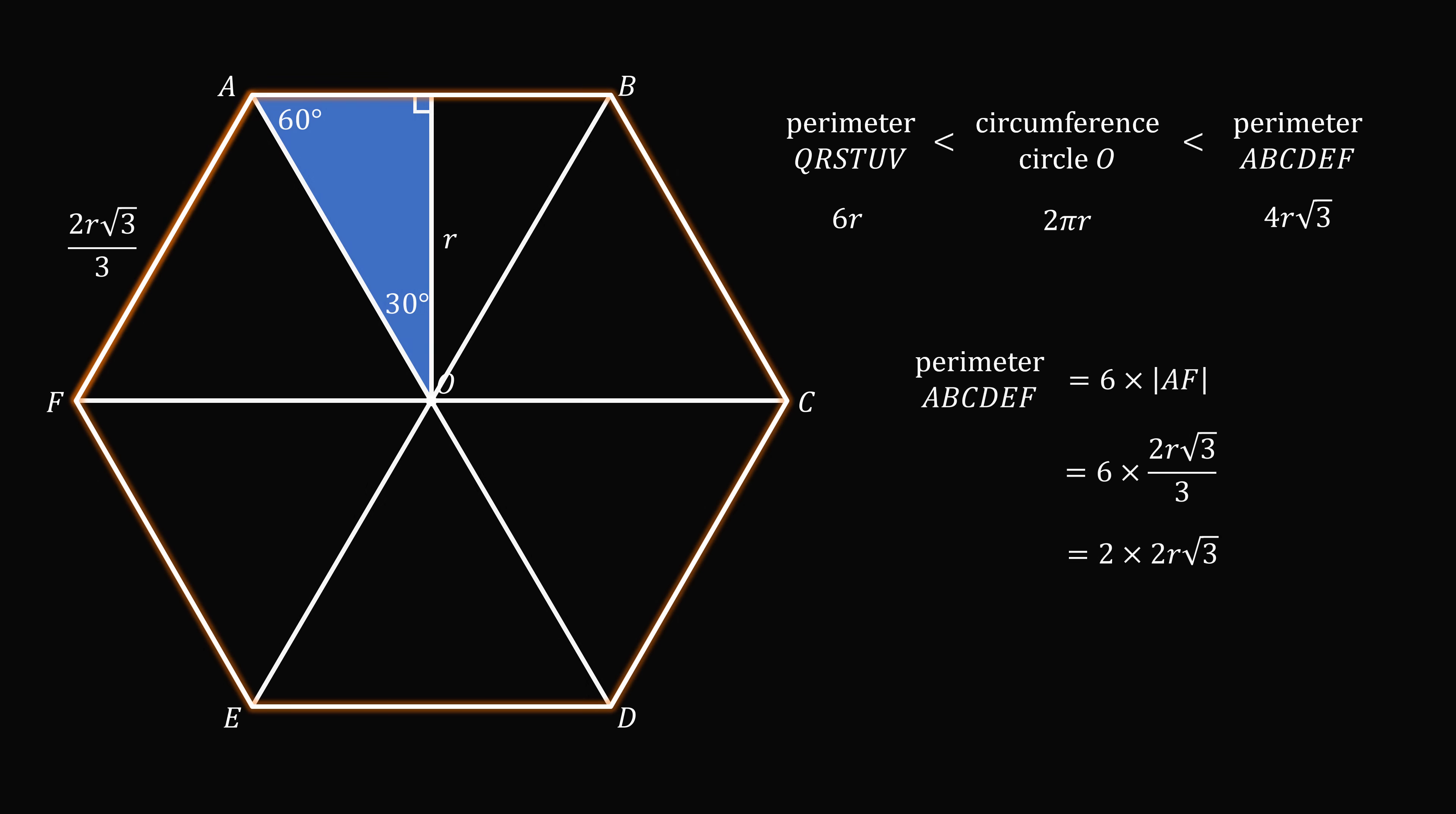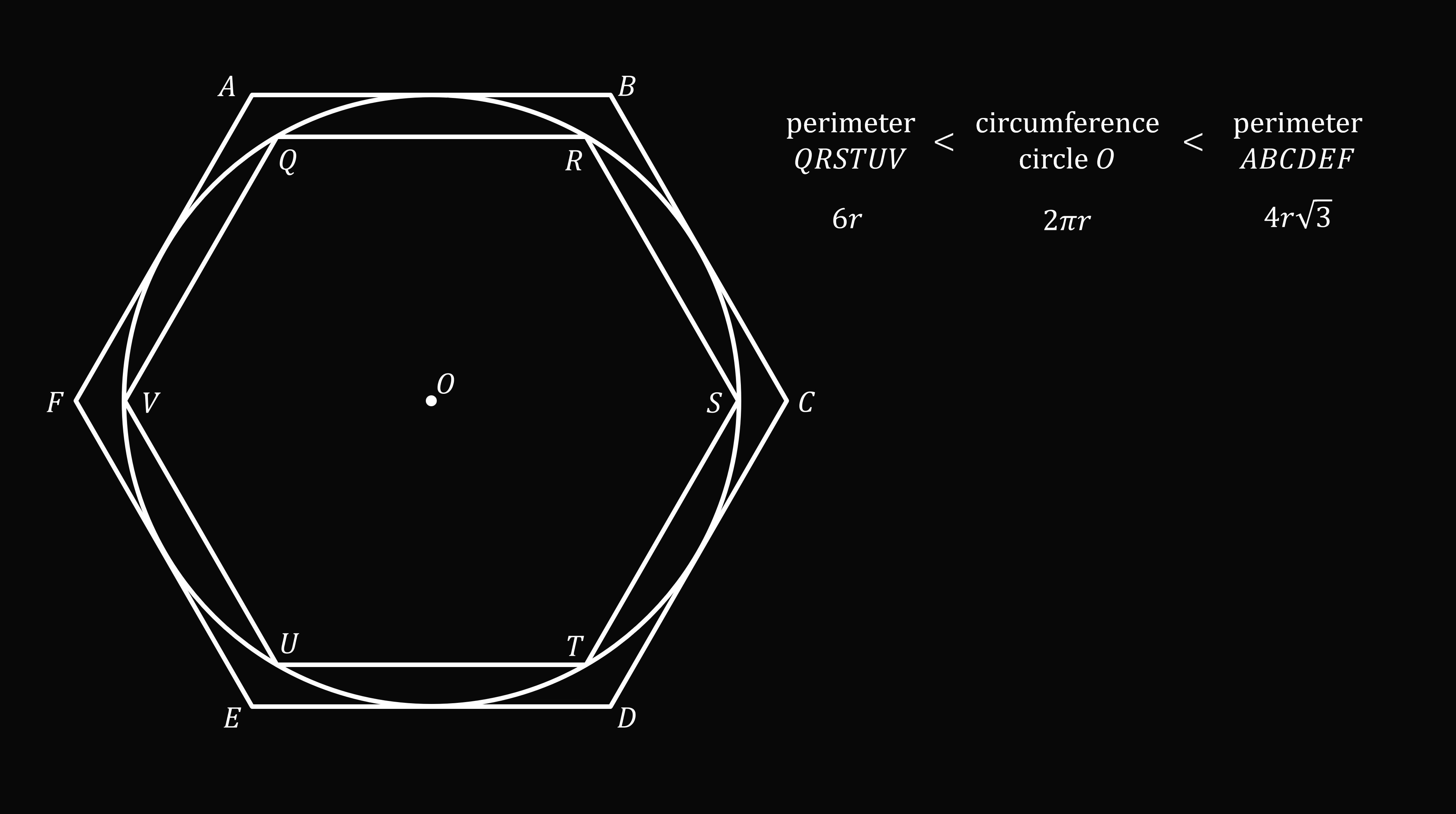So let's put this all together. We'll go back to our original diagram. By considering the lengths of these shapes, we have come up with an inequality. We have 6R is less than 2 pi R is less than 4R root 3. Since R is a positive quantity, the radius is a positive quantity, 2R, the diameter, is also a positive quantity. You can divide an inequality by a positive quantity without changing the direction of the inequality sign. So let's divide through by 2R. So we have 6R divided by 2R, which simplifies to 3, 2 pi R divided by 2R, which simplifies to pi, and 4R root 3 divided by 2R, which simplifies to 2 root 3. So this gives us the inequality 3 is less than pi is less than 2 root 3, and that is exactly what we wanted to prove.